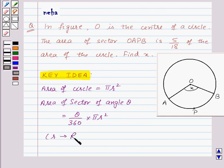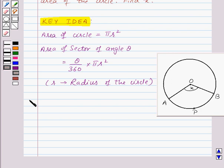Here R is the radius of the circle. Now let's move on to the solution. First, let us see what we are given in the question.